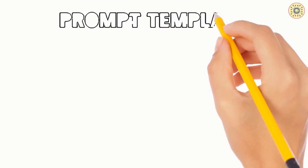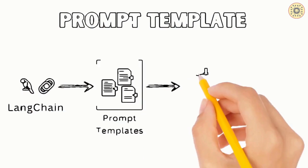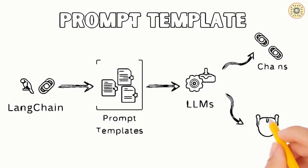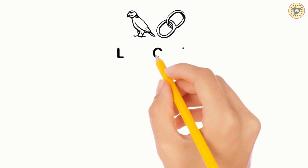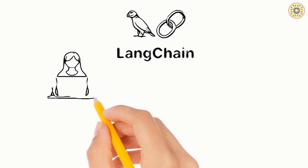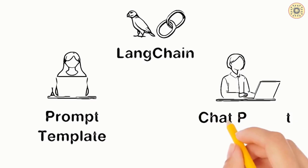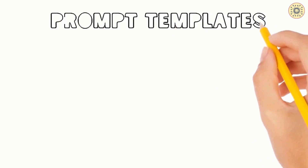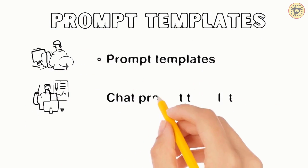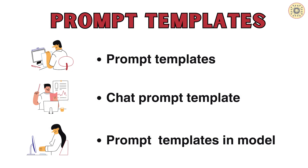A prompt is an input for LLMs. Good prompt means good output. Prompt templates, on the other hand, are predefined recipes for generating prompts. A template may include instructions or few-shot examples. To create prompt templates, you can use the classes of LangChain. For example, you can use the PromptTemplate class to create a template for a string prompt, or you can leverage the ChatPromptTemplate class for chat models to create a list of chat messages. In this video, we'll cover how to work with prompt templates — first PromptTemplate, then ChatPromptTemplate, and finally how to use this template with a model. To show this, we'll use the Llama2 model with Ollama.